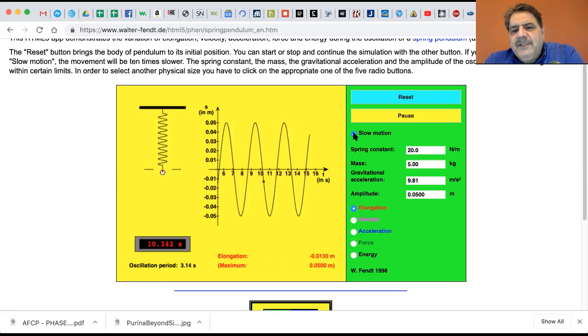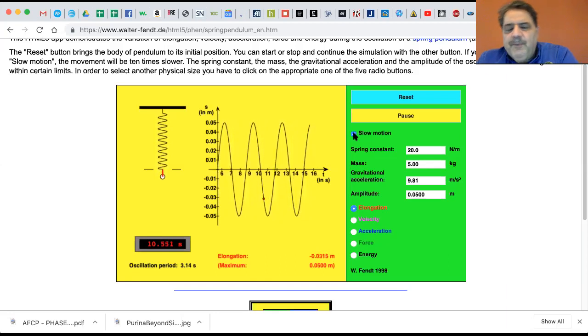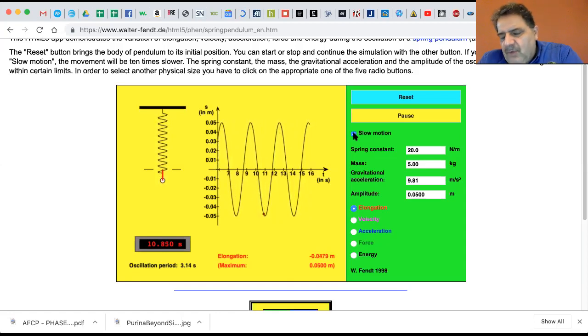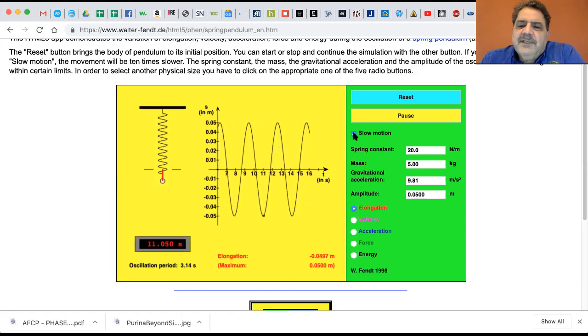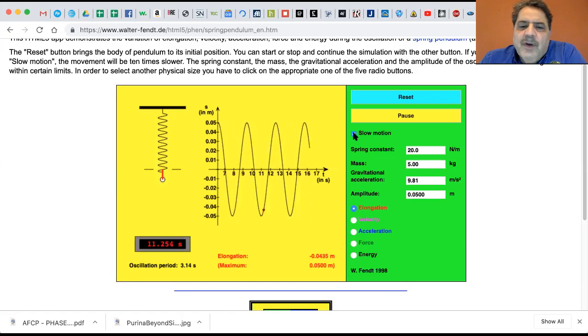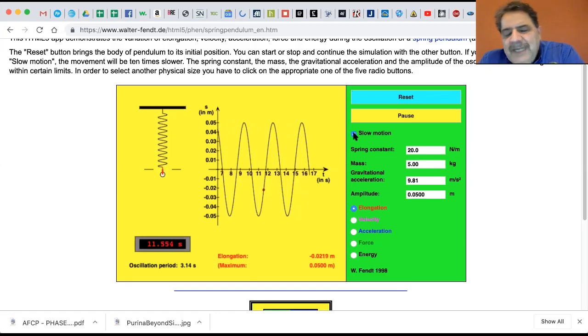Just for information, he's got a spring constant of 20 newtons per meter, a mass of 5 kilograms. Of course, the gravitational acceleration is 9.81 meters per second squared, and the amplitude is half a meter.